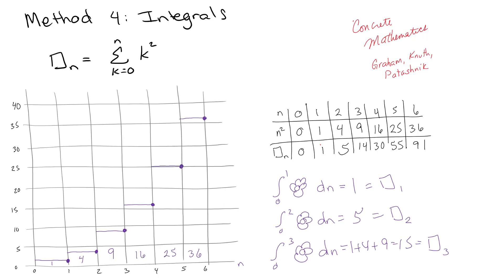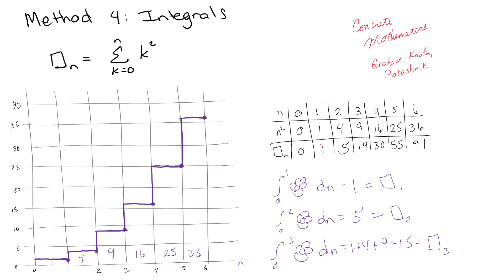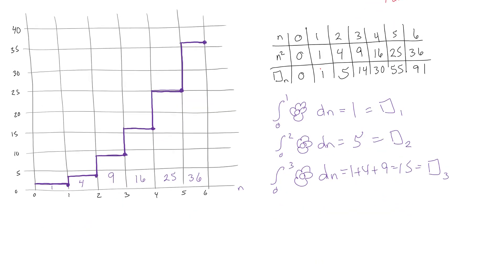This is basically just a step function. The area under this flower curve is equal to the box sub n term. Now I can recognize that I can draw in the n squared curve as well. I've got my n squared graph and my step function, and the area under the n squared curve is going to be close to but not quite equal to box sub n.